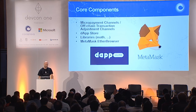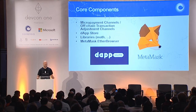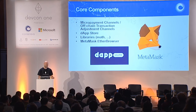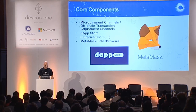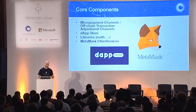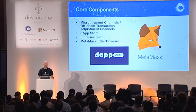Dapp stores everywhere for lots of different kinds of purposes. Many different libraries — we're going to have to essentially build all of the libraries onto this decentralized infrastructure eventually. And MetaMask — different kinds of browsers to enable different kinds of devices in different contexts to be nodes on the network.